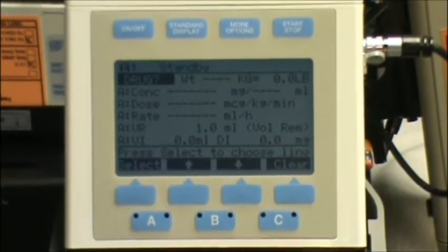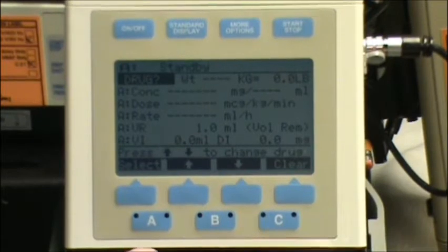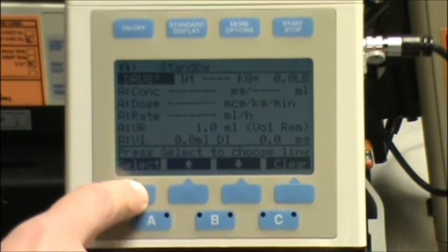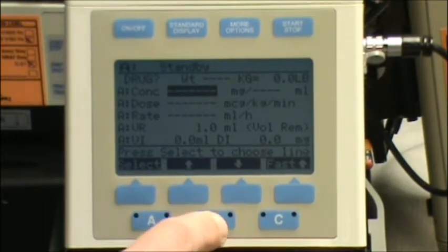vasopressin. And for this simulation I'm going to simulate that I have an order for vasopressin at .04 units a minute. So I'm going to hit select and bypass the weight because I know that vasopressin is not weight based.